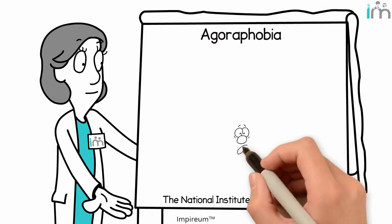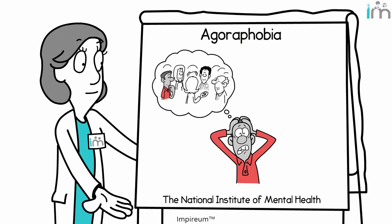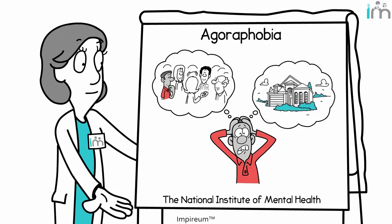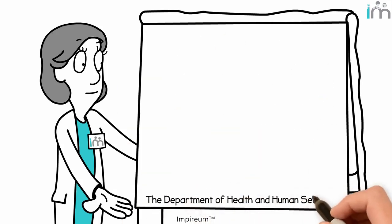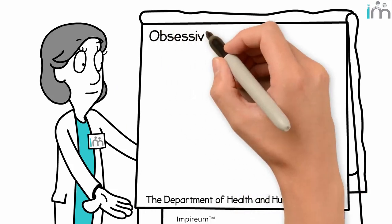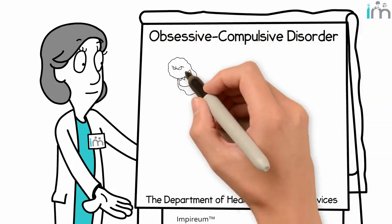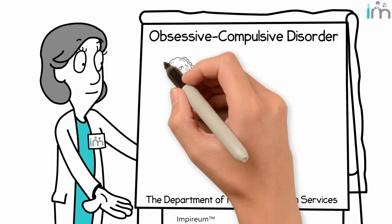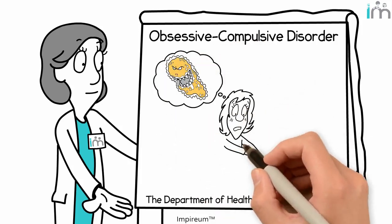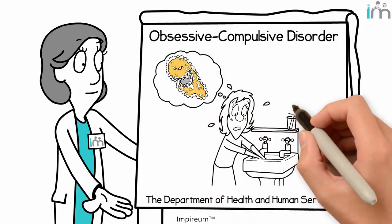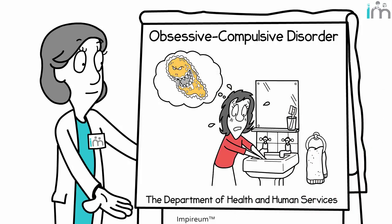And agoraphobia, the fear of things like being in a crowd, and being away from home. The Department of Health and Human Services also adds obsessive-compulsive disorder, which causes sufferers to overly worry about things like germs. It can often drive them to perform unusual, ritualistic behaviors, such as excessive hand-washing.